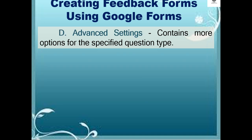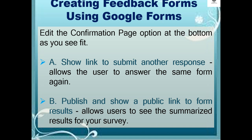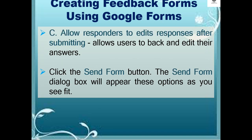There are also advanced settings that contain more options for the specified question type. Then edit the confirmation page option at the bottom as you see fit. First, show link to submit another response — this allows the user to answer the same form again. Publish and show a public link to form results — this allows users to see the summarized results for your survey. Then allow responders to edit responses after submitting, which allows users to go back and edit their answers. Then click the send form button.